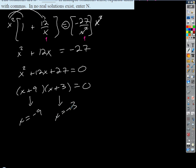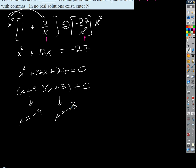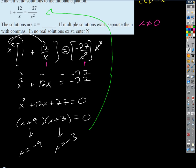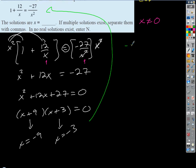So those are our solutions. None of those are excluded, so they should both work. We would of course want to check those, and on the first problem here I'll go ahead and check them. If I plug in negative 9, I get 1 plus 12 over negative 9 equals negative 27 over negative 9 squared.